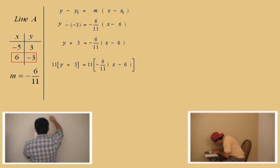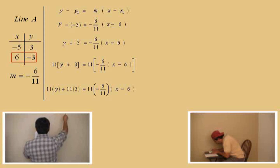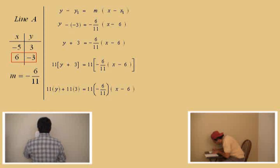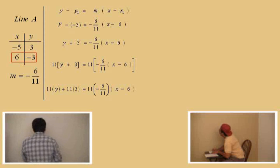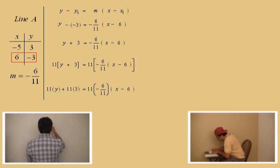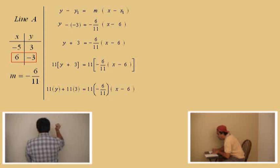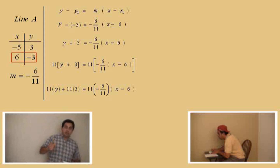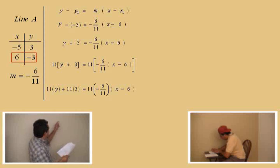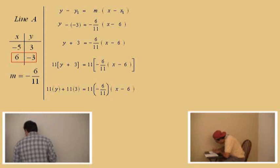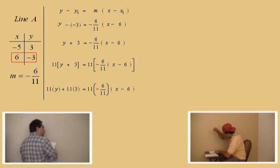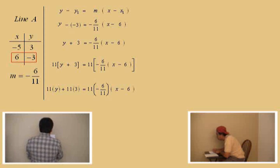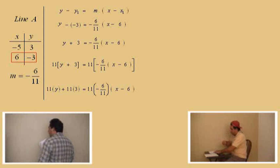Eleven times y is eleven y. Eleven times three. And that eleven is being multiplied to the right quantity there. What's left on the left-hand side here? Eleven y plus thirty-three. Now, the right-hand side — what happens to that eleven and the negative six elevenths, Charlie? They cancel. So, Charlie, what do you get when you clear the fractions on the right? Negative six times x minus six.